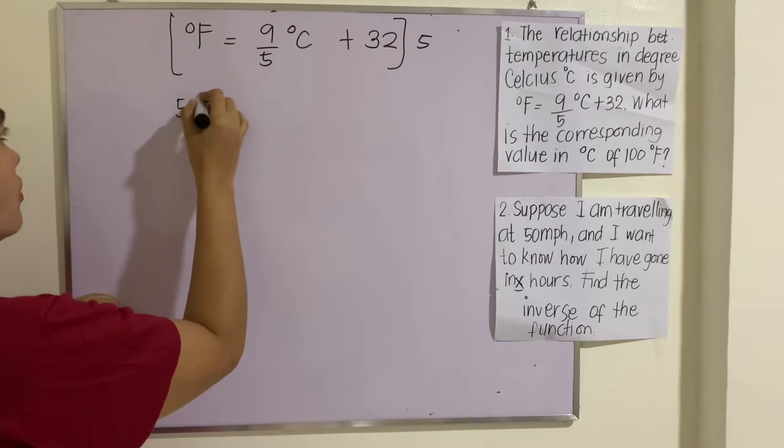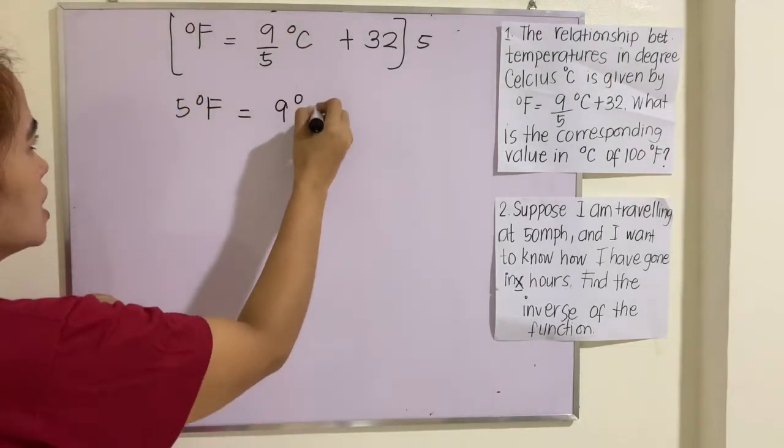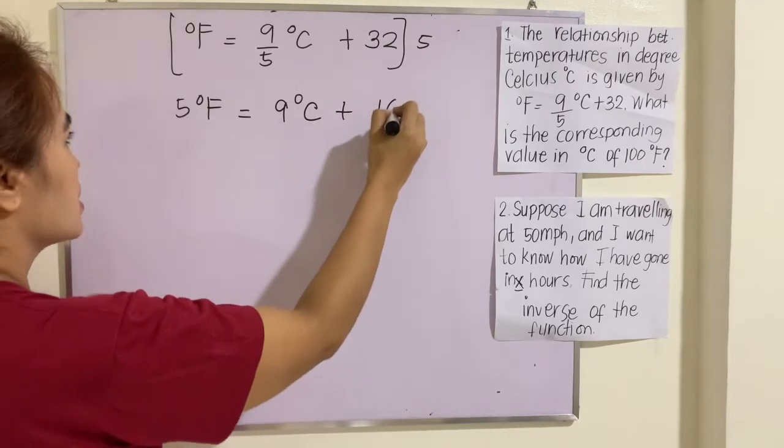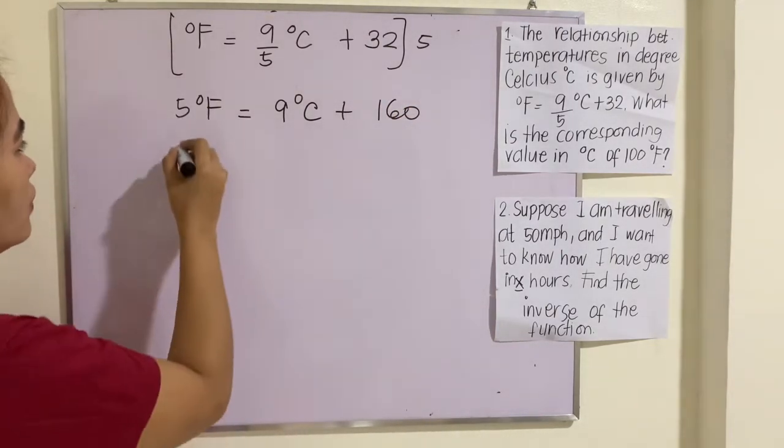That will be 5°F = 9°C + 160. Substituting the value of F here,